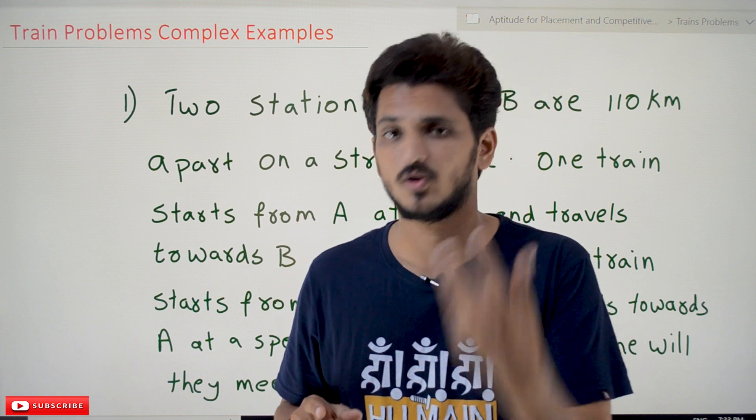Assume they meet x hours after 7 a.m. We need to identify x. The total distance is 110 km. Distance covered by train A equals speed × time = 20x.